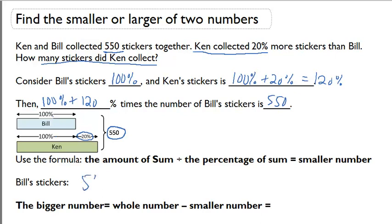So I can do 550 divided by 220%. That's going to equal 250. And that gives us Bill's stickers.